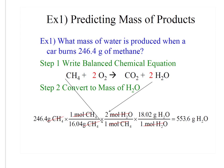Predicting mass of products. So what mass of water is produced when a car burns 246.4 grams of methane? So you would have to write the balanced equation, and then convert to the mass of water using your molar ratio, your coefficients in your equation. So you start with what they gave you in the problem, 246.4 grams of methane. Molar mass of methane to get to moles. Then you're going to use your molar ratio, your coefficients from your balanced equation, to switch between compounds. So that will get you to moles of water. Molar mass will get you to grams of water. I had four sig figs, I need four sig figs.